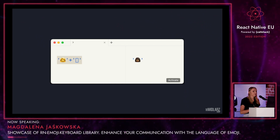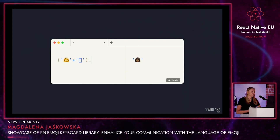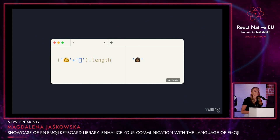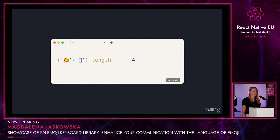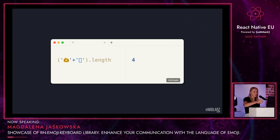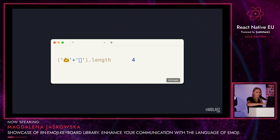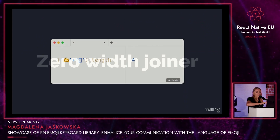Coming back to the test we did before — what would happen if we check the length of the emoji that includes a skin tone modifier? We're going to get four: two per each element — the emoji itself and the skin tone modifier.